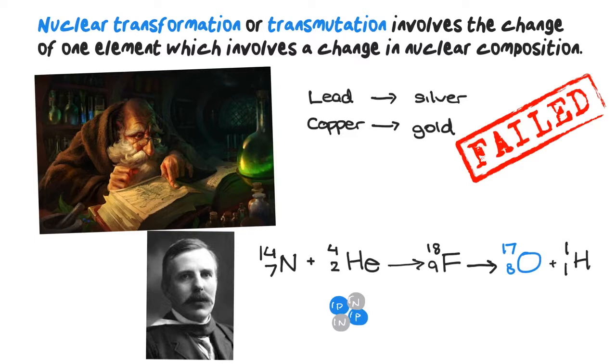Synthetically produced elements with an atomic number above uranium, that is 92, are known as transuranic elements.